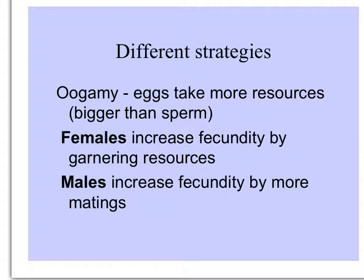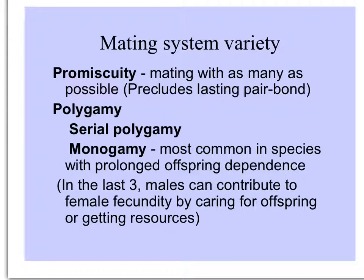In oogamy — the breeding system where eggs are larger than sperm — females increase their fecundity by having more resources to produce gametes that require more energy, whereas males increase their fecundity simply by producing more sperm and having more matings. Mating systems vary from one extreme, promiscuity — with each individual mating with as many others as possible — to, at the other end, monogamy.